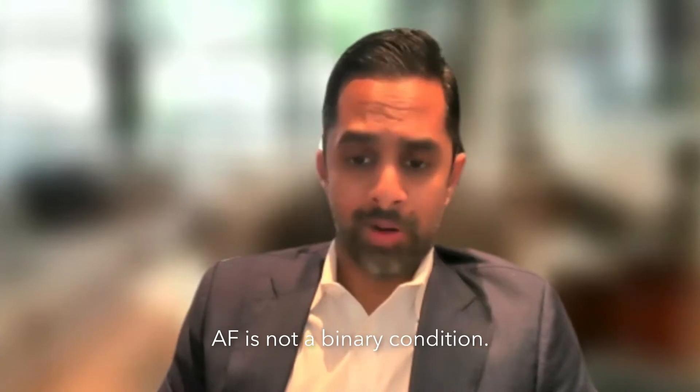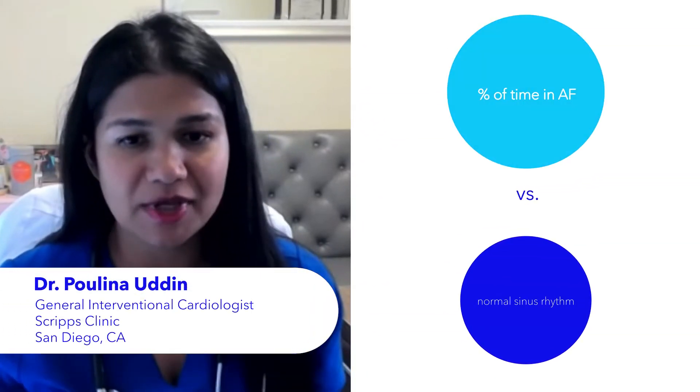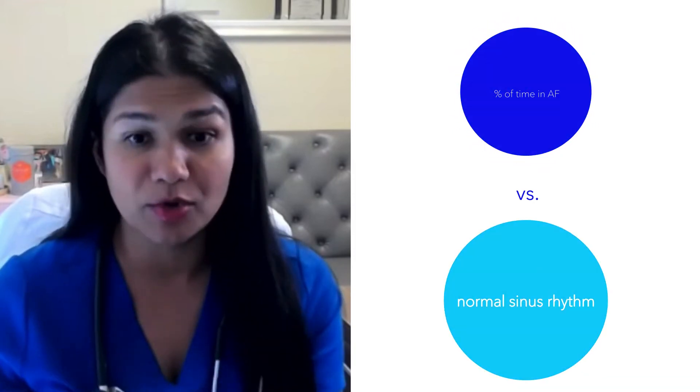It's an important concept for those of us who take care of these patients, because it really highlights the point that AF is not a binary condition. Historically, arrhythmias like supraventricular tachycardias or atrial flutter are discrete arrhythmias with a discrete anatomical construct. Atrial fibrillation isn't that — it's a chronic condition. When people talk about AF burden, we're really trying to figure out what percentage of the time this person is in atrial fibrillation versus in a normal rhythm.